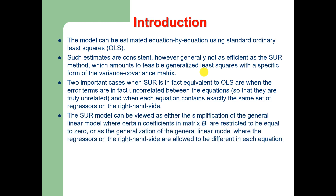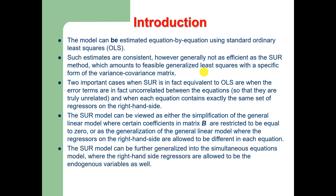The seemingly unrelated regression model can be viewed as either the simplification of the general linear model — where certain coefficients in matrix B (the matrix of betas) are restricted to be zero — or as the generalization of the general linear model where the regressors on the right-hand side are allowed to be different in each equation. The SUR model can be further generalized into the simultaneous equations model where the right-hand side regressors are allowed to be endogenous variables as well.